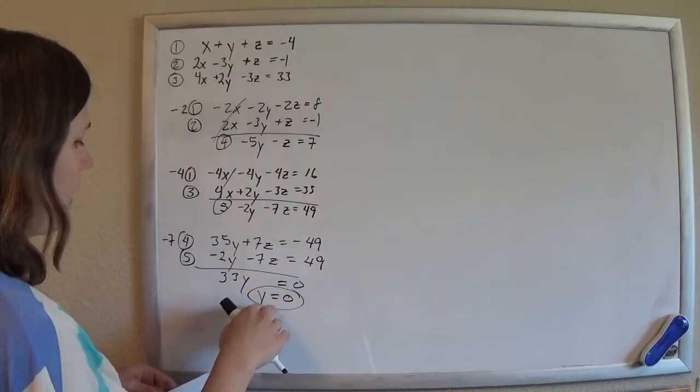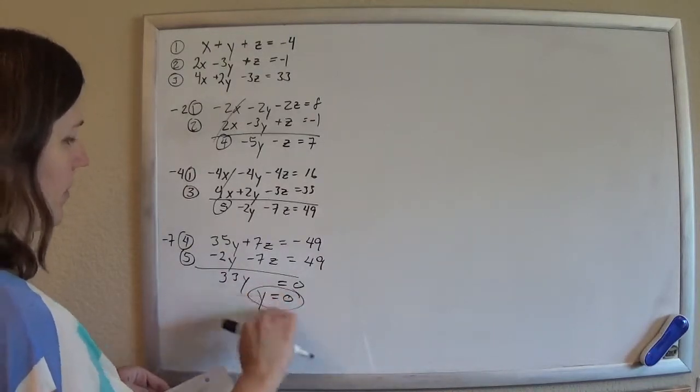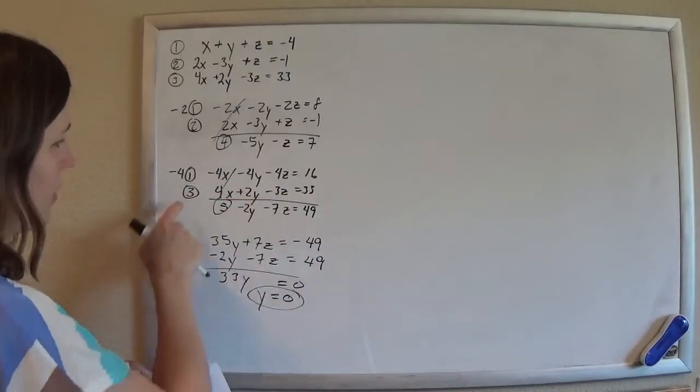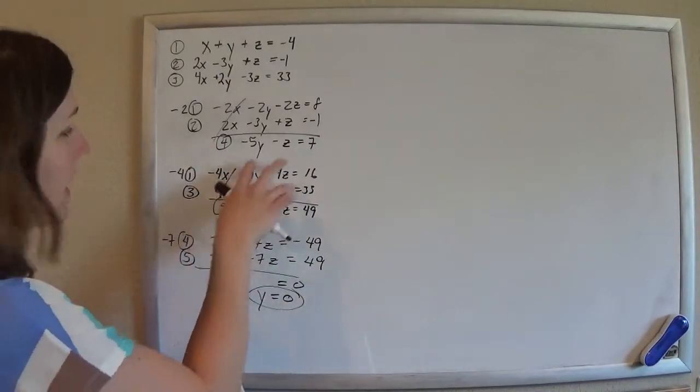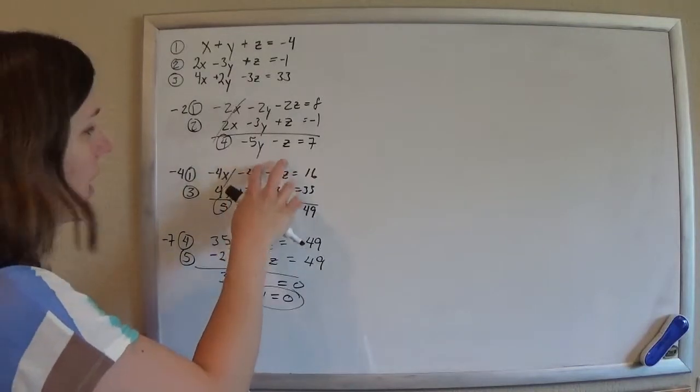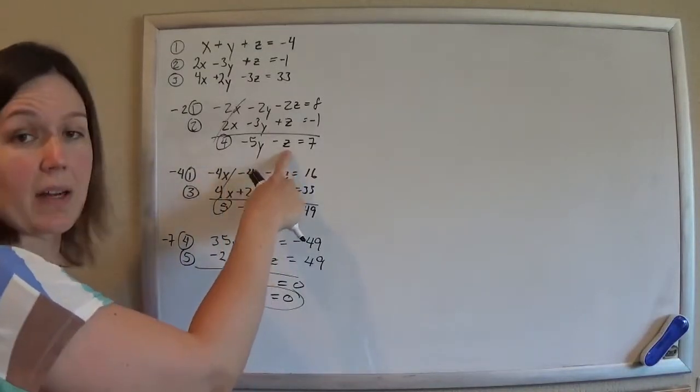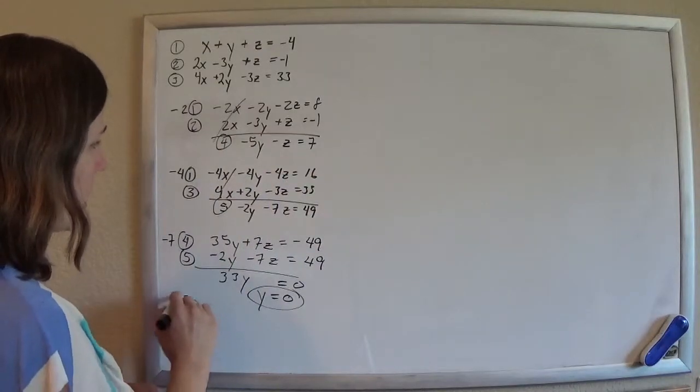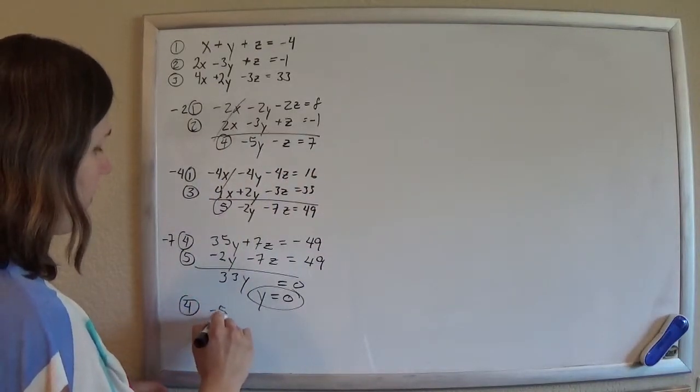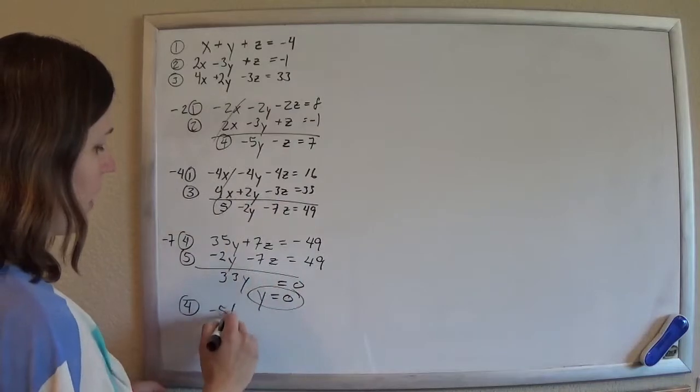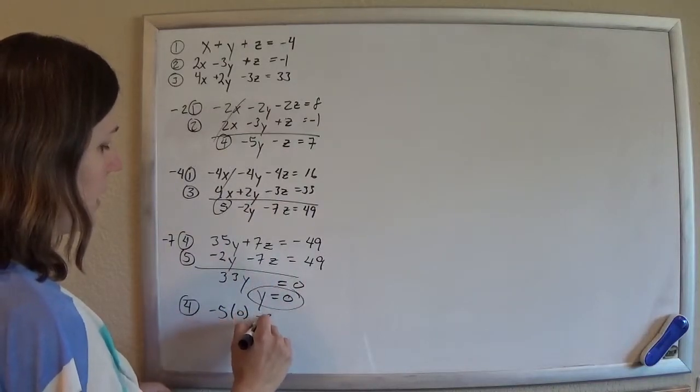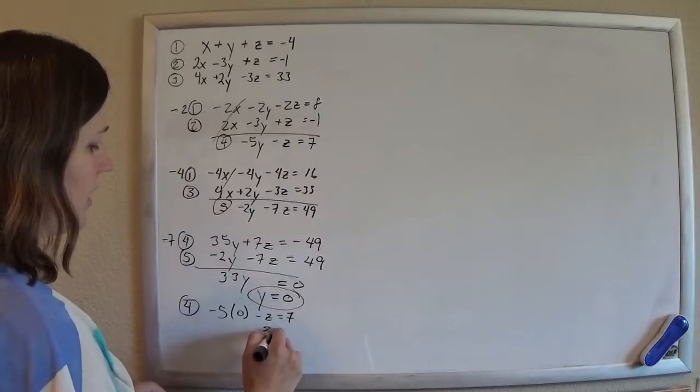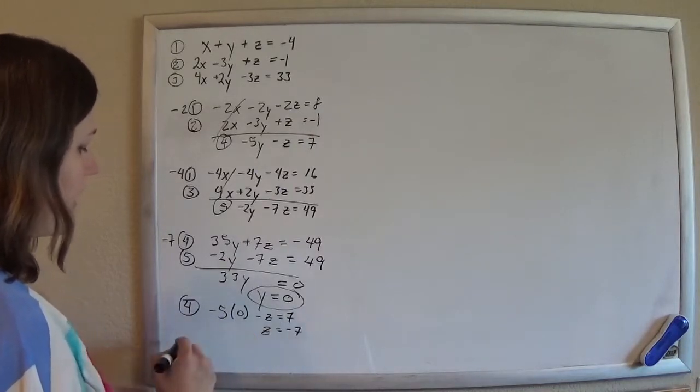And so now that I've got one of my variables, I can just back-substitute it, put it in either 4 or 5, because that one had only two unknowns. And if we know one of them, we'll automatically get the other. So either one, take your pick. I'm going to plug it into 4. So if I have negative 5 times, now I know the y is 0, minus z is 7. Then it looks like z is minus 7. Check.